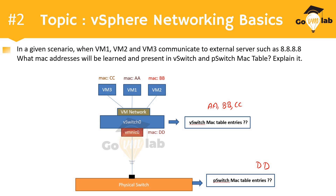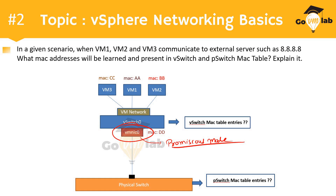Before revealing the answer, spend some time and try to find the correct answer for this problem statement. Now, always remember that in virtual networking, your physical adapter — what we call the uplink — by default is always configured into promiscuous mode. Whenever you install the ESXi kernel on a physical bare metal server, by default that kernel configures all of the uplinks attached to that ESXi host in promiscuous mode.